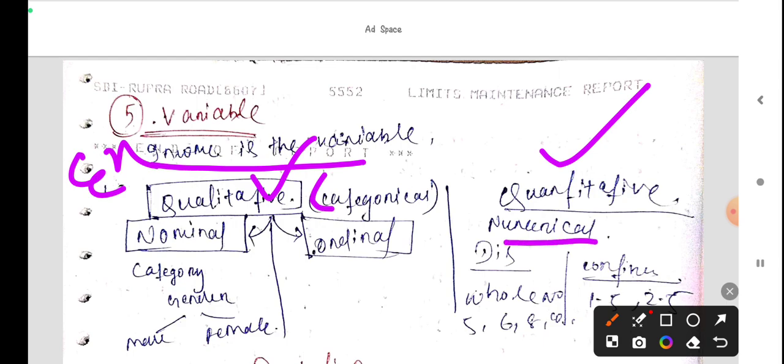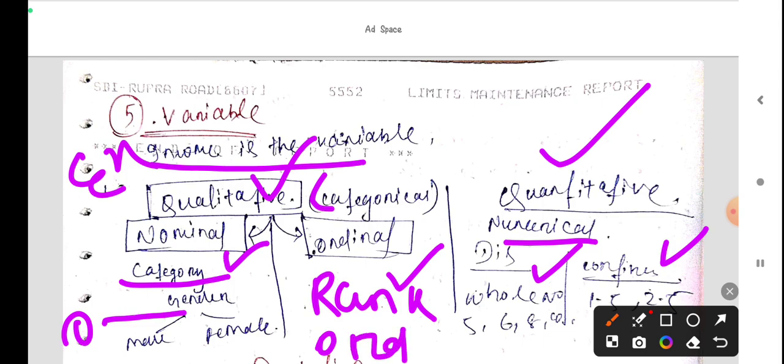Qualitative is two types. One is nominal, one is ordinal. And quantitative is discrete and continuous. Nominal is category based. Nominal category we do, gender is male, female, and others. That is category. And ordinal is rank based. You are ordering, like first, second, third. That is order, that is rank.